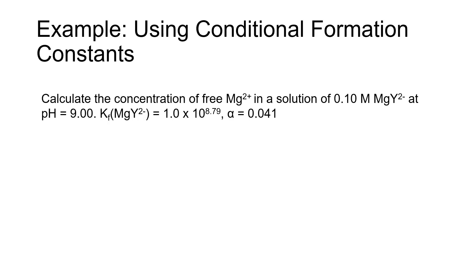The formation constant for the magnesium EDTA complex, MgY2 minus, is 10 to the 8.79. This is from table 12.2 in Harris, and the alpha value for EDTA, for the Y4 minus form of EDTA at a pH of 9, is 0.041. That comes from table 12.1 in Harris.